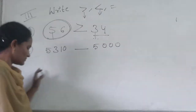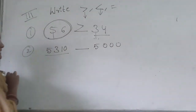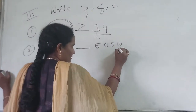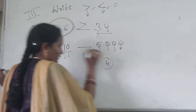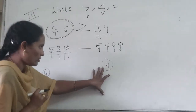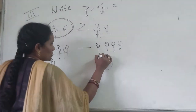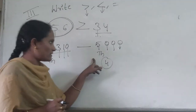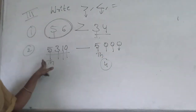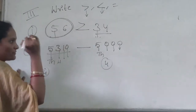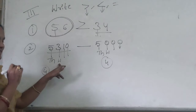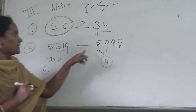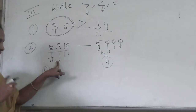Now compare these two numbers. This number has four digits: ones, tens, hundreds, and thousands. The other number also has four digits. Both are four-digit numbers, so we check the thousands place first. In the first number the thousands digit is five; in the second number it is also five — both are equal. So we check the next place value: hundreds. In the first number there is a three in the hundreds place; in the second number there is a zero. So three is the bigger number.